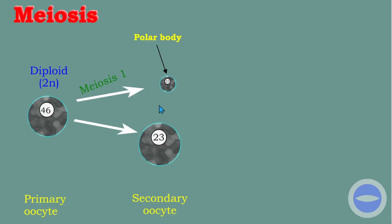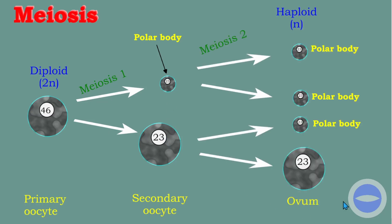The polar body was just there to decrease the number of chromosomes; it degenerates and does not continue with the process. The secondary oocyte and the polar body then undergo meiosis two. At meiosis two, the secondary oocyte produces another large cell and one more polar body. We now have one haploid cell with 23 chromosomes and three polar bodies in total. Of the four cells produced through meiosis, only one will be an ovum; the three polar bodies degenerate and will not be fertilized.